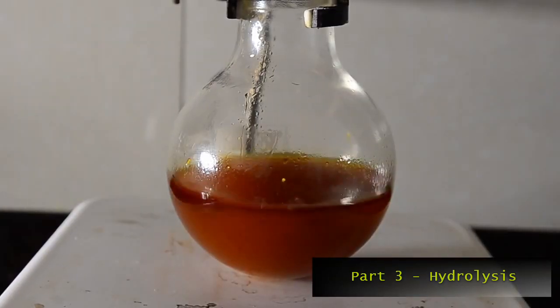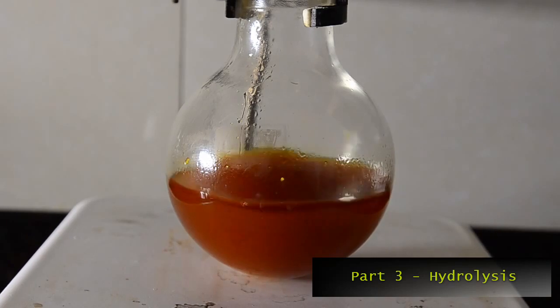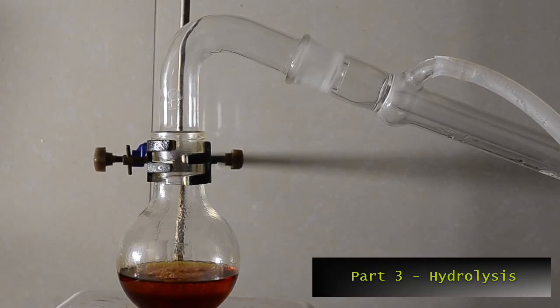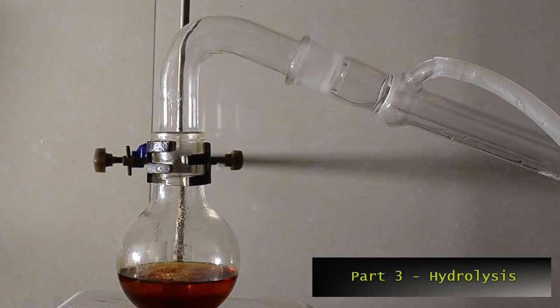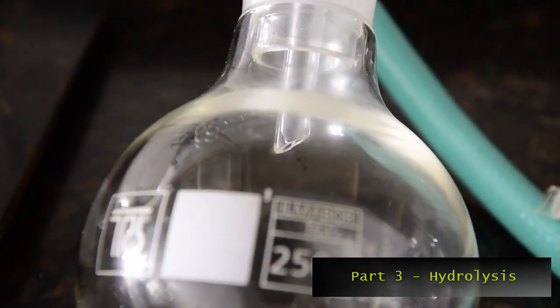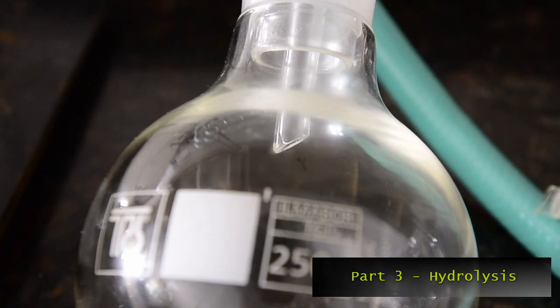Stir the mixture using a magnetic stir bar and set up for simple distillation. We will distill off the toluene from the mixture and perform the hydrolysis at the same time. As you distill you'll see a mixture of toluene and water coming off, which will form layers in the receiving flask.